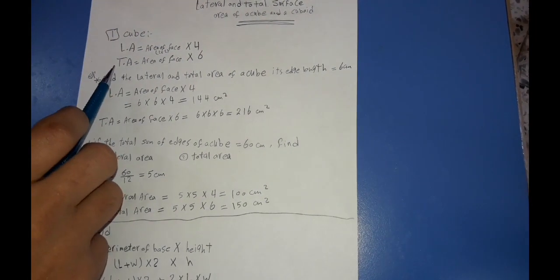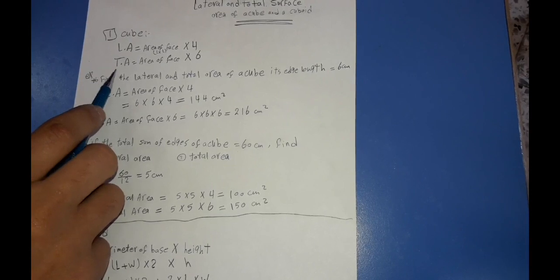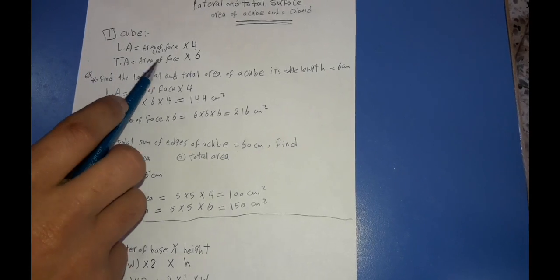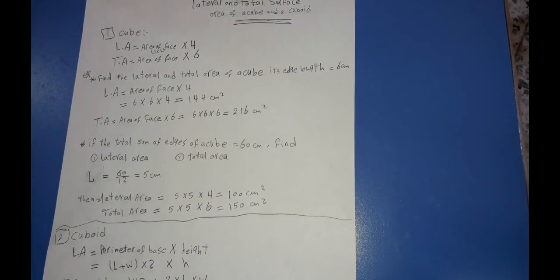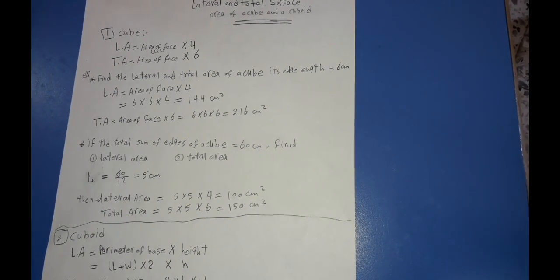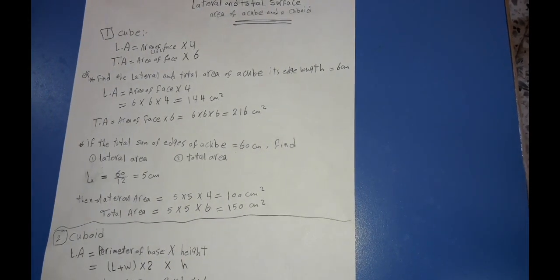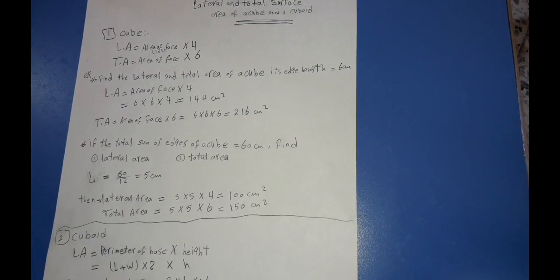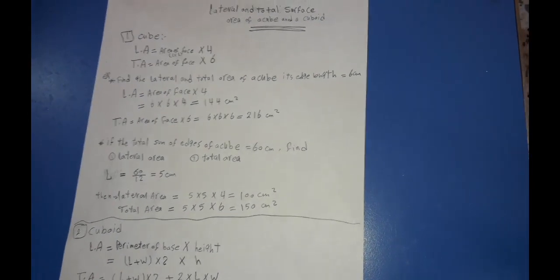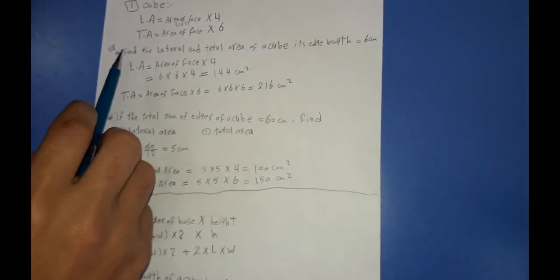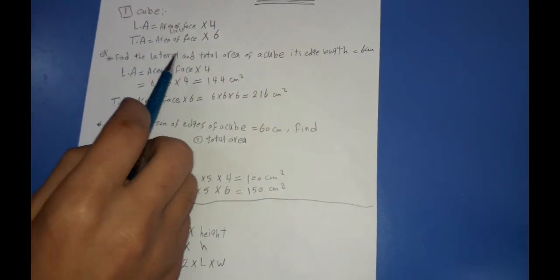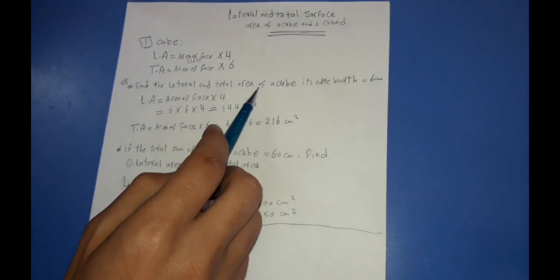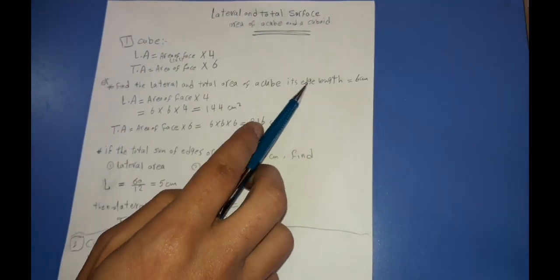And the total area meaning the lateral faces plus the top surface and ground. If we took an example: find the lateral and the total area of a cube whose edge length equals 6 cm.